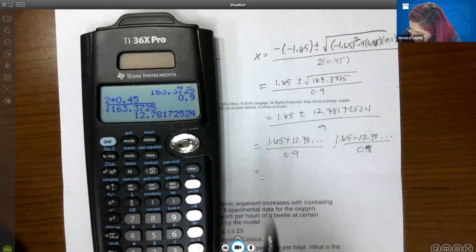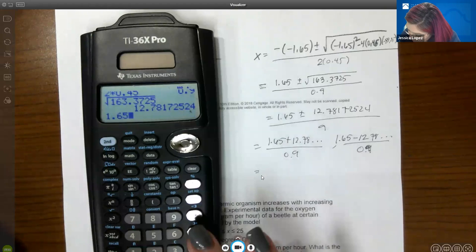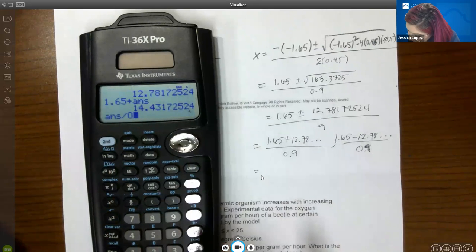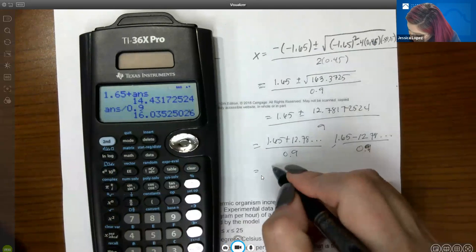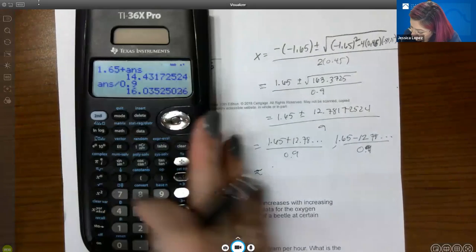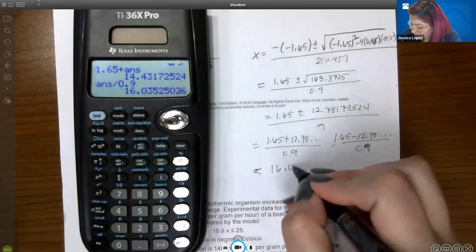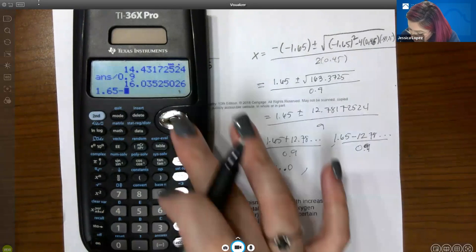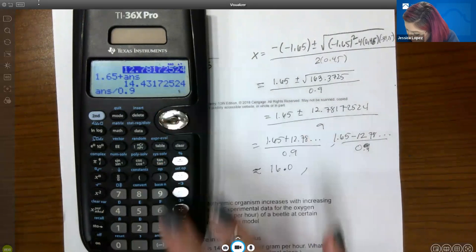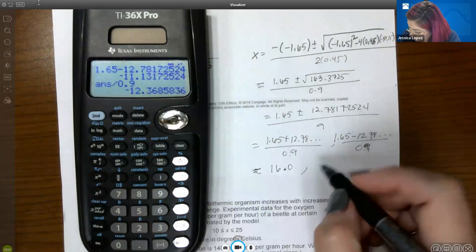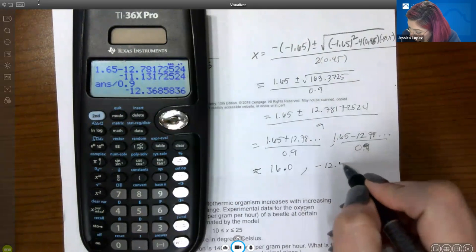So let's see. We have 1.65 plus that answer divided by 0.9. We get about, rounded to one decimal place, we get about 16.0. Or 1.65 minus that 12 point something divided by 0.9. That is a negative 12.4.